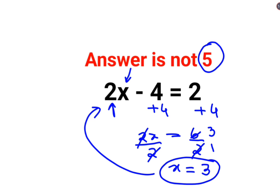Let's put it back in the question. So 2 times instead of x we will put 3 minus 4. Let's understand what is the answer. So 2 times 3 is 6 minus 4. The answer is 2.